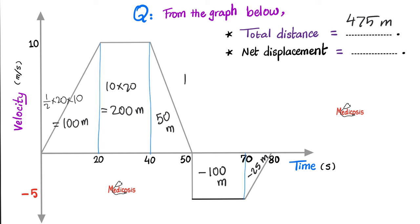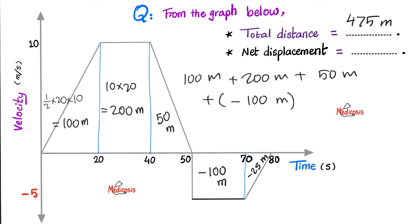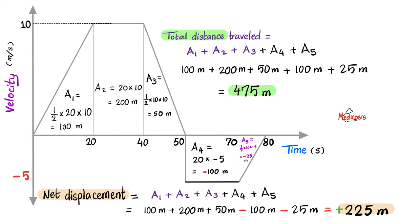How about the net displacement? We've got to be careful. Here is positive 100 meters, plus 200 meters positive, plus 50 meters positive, minus 100, minus 25 meters. 100 plus 200 is 300, plus 50 is 350, minus 100 is 250, minus 25 is 225 meters. Notice that the total distance and the net displacement are not the same. And here are the same answers in color — pause and review.